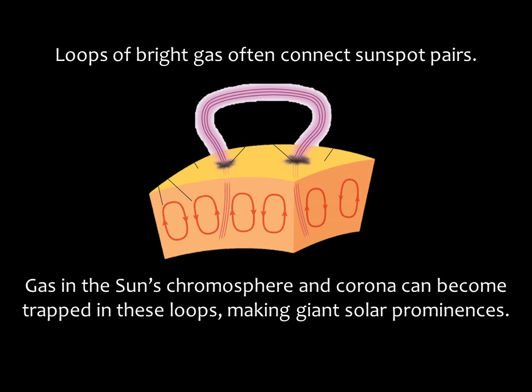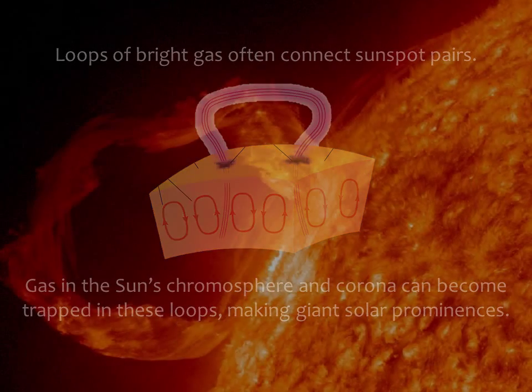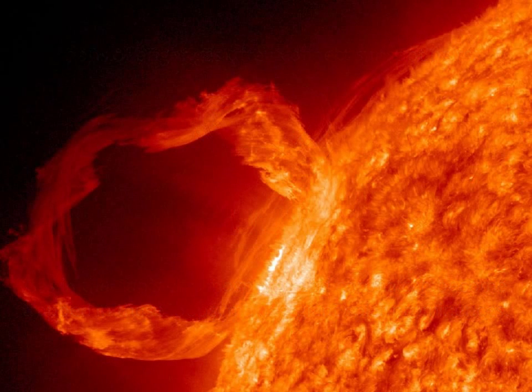Sunspots tend to occur in pairs connected by a loop of magnetic field lines that can arc high above the sun's surface. Gas in the sun's chromosphere and corona can become trapped in these loops, making giant solar prominences. Some prominences rise to heights of more than 100,000 kilometers above the sun's surface — that's about 8 Earth diameters. Individual prominences can last for days or even weeks, and like sunspots, they disappear when the magnetic fields finally weaken.